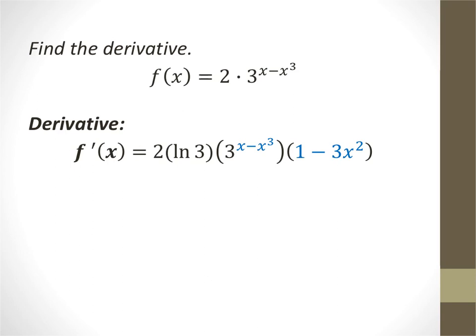For this one, the 2 is really just a coefficient. The multiplication sign shows it's 2 times 3 raised to the x minus x cubed. The 2 comes along for the ride, and then we use what we know because this is a raised to some function of x. It's the natural log of the base, keep your function exactly the way it is, and chain rule out the derivative of the exponent. The derivative of x is just 1; the derivative of negative x cubed is negative 3x squared.